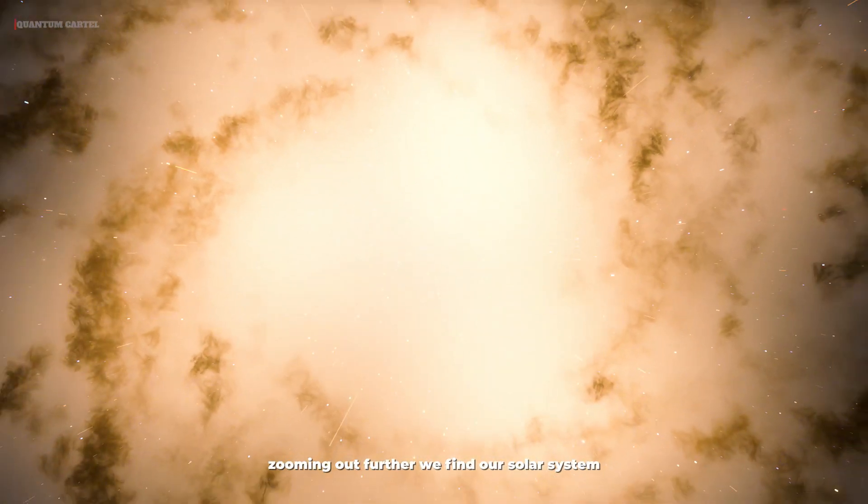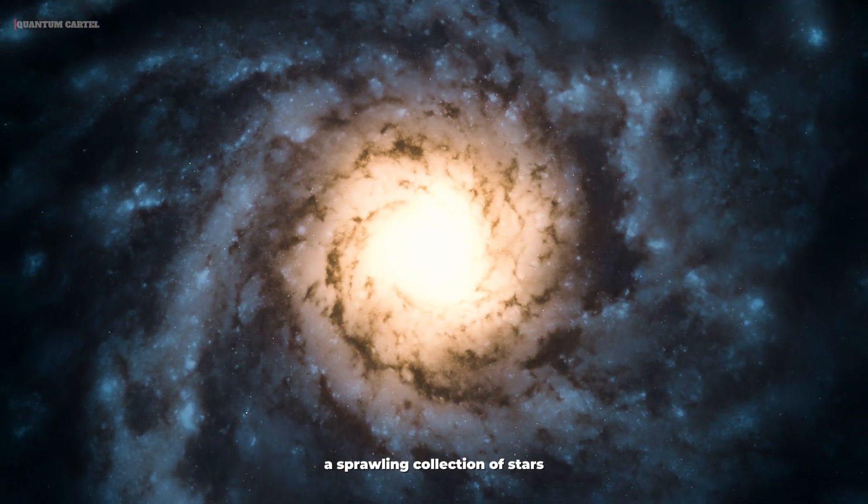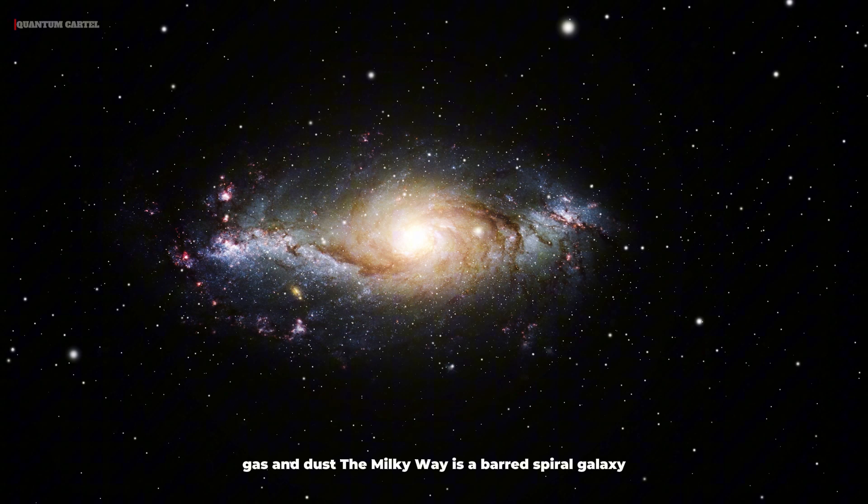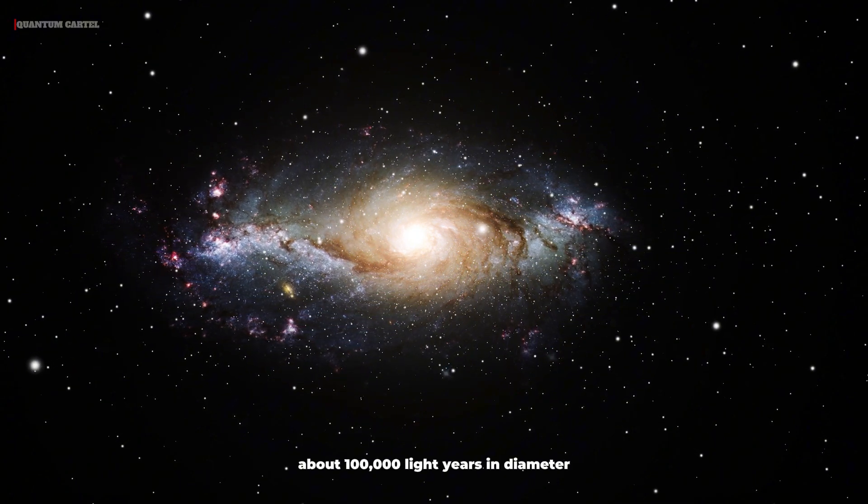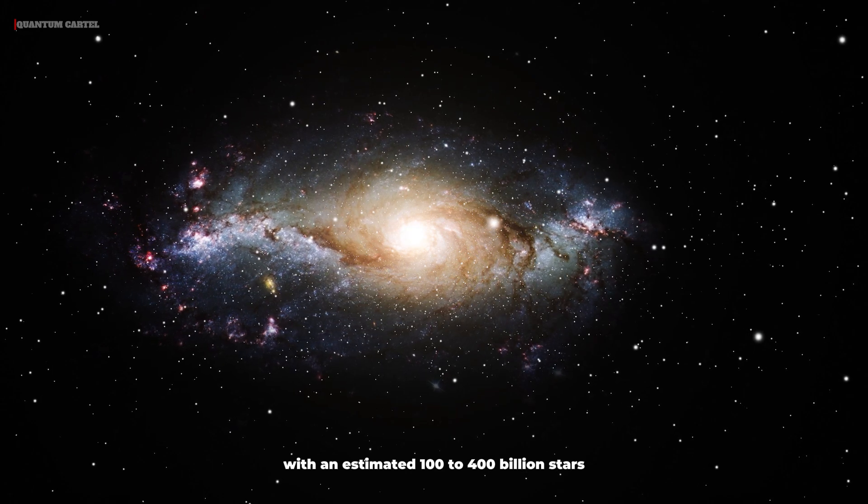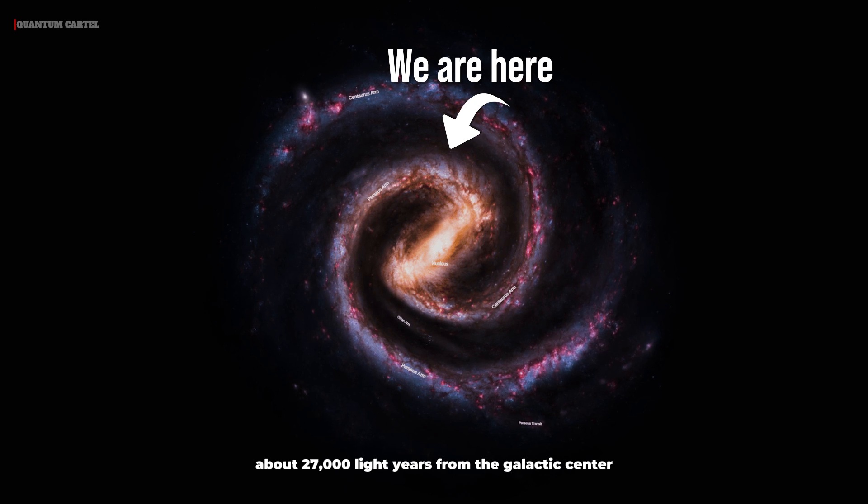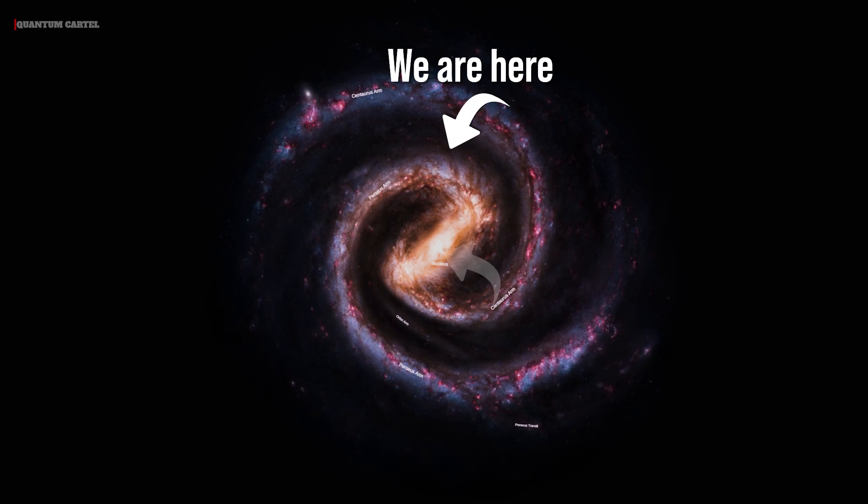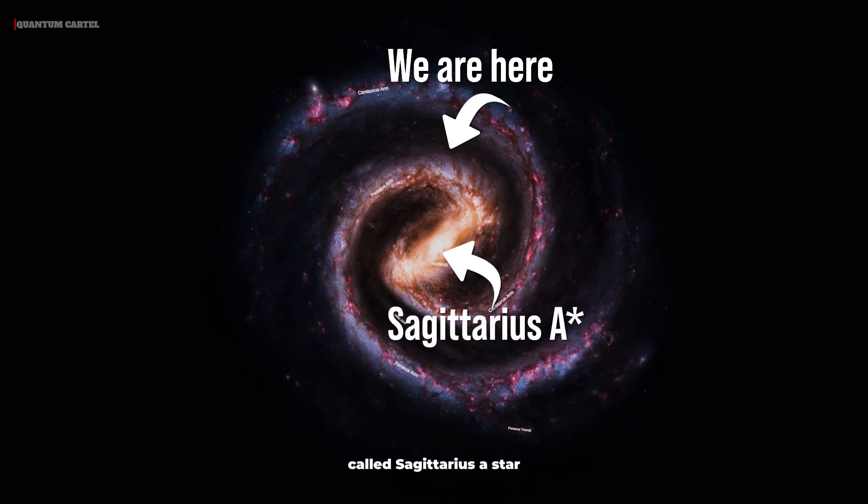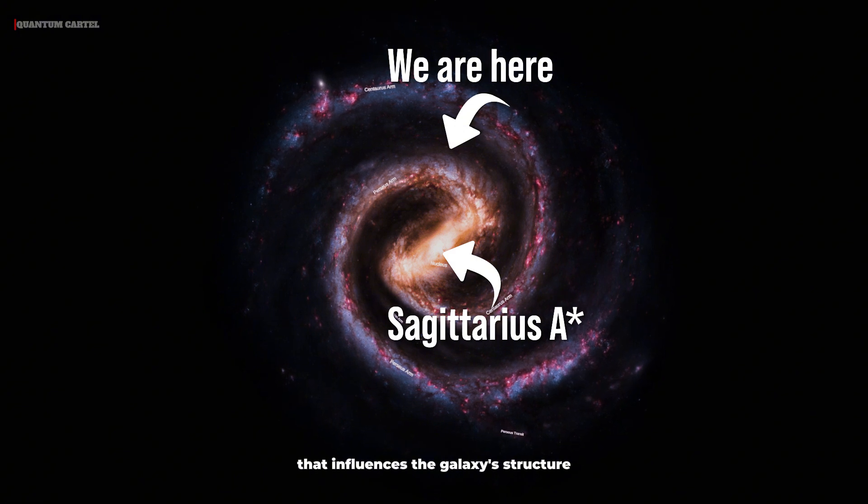Zooming out further, we find our solar system nestled within the Milky Way galaxy, a sprawling collection of stars, gas, and dust. The Milky Way is a barred spiral galaxy, about 100,000 light-years in diameter, with an estimated 100 to 400 billion stars. Our solar system resides in the Orion Arm, about 27,000 light-years from the galactic center. This center is home to a supermassive black hole called Sagittarius A*, an enigmatic force that influences the galaxy's structure.